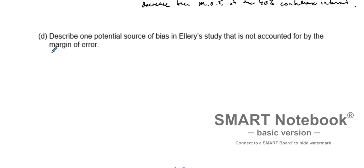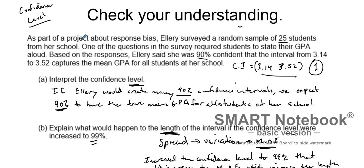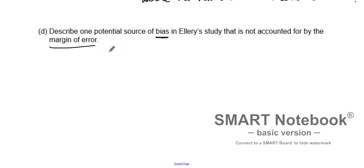Describe one potential source of bias in the study that is not accounted for by the margin of error. Confidence levels and confidence intervals are great, but that doesn't mean you find the true mean if you have bad data. Bad data is bias. The bias here: she required students to state their GPA out loud. That is response bias — because if you had to state your GPA in front of everybody, you'd probably want to state it higher so you don't appear less smart or get embarrassed.